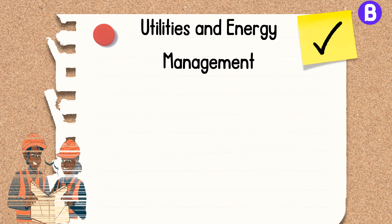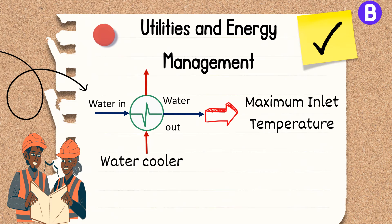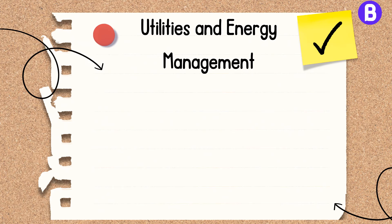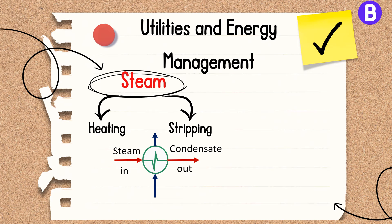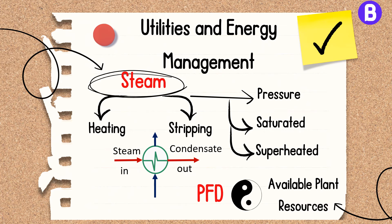For instance, when considering a water cooler in a PFD, it should account for the maximum inlet temperature of cooling water. If the plant has cooling water available at 25°C, we can't use it to cool a fluid below that temperature, and we should consider a reasonable temperature approach. Similarly, if using steam for heating or stripping, the PFD should consider the operating pressure of the available steam and whether it is saturated or superheated. A PFD should be in harmony with available plant resources; otherwise, we may need to add new utilities, increasing overall project cost.